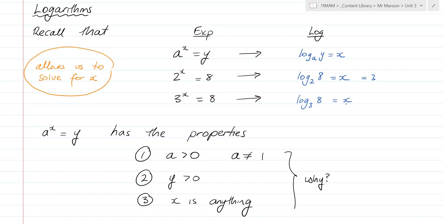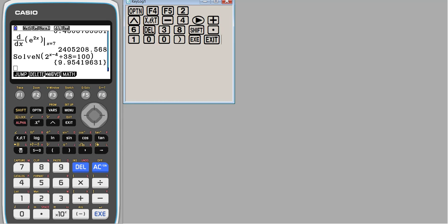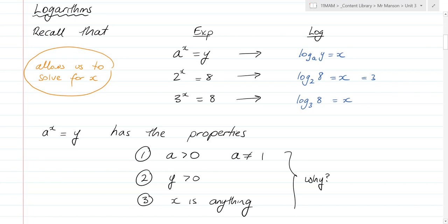3 squared is 9, so it's a little bit less than 2. But you can put log base 3 of 8 in your calculator. I'm hoping you all know how to get log base a of b on your calculators. If you click on F4 to go into math, then you've got log a b there. You can type in your base and your value.